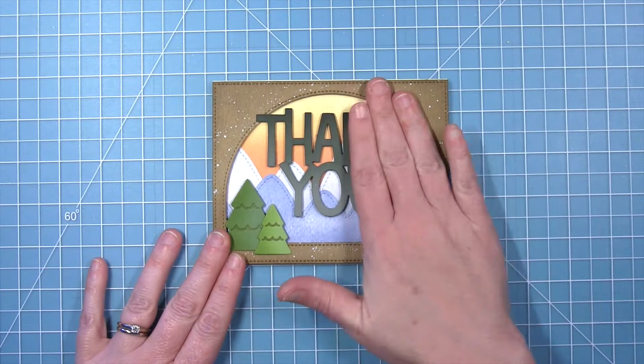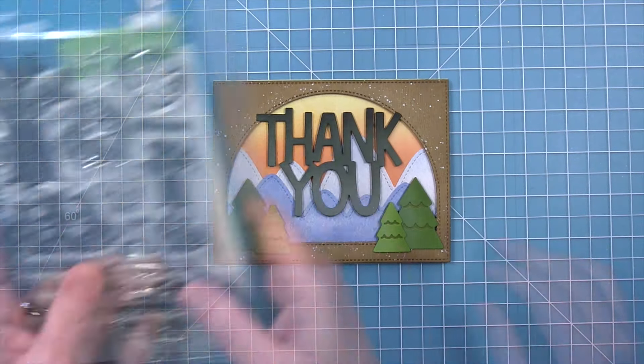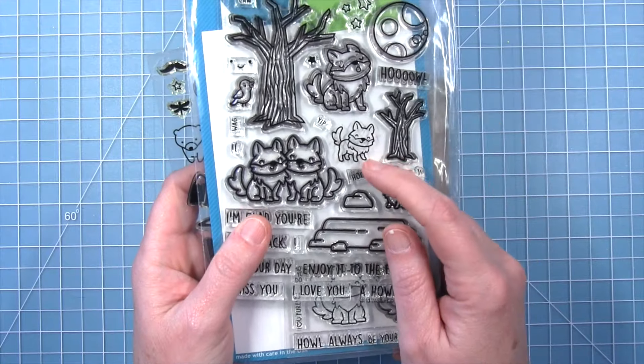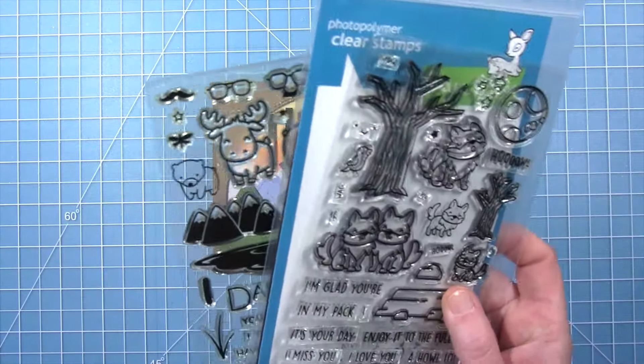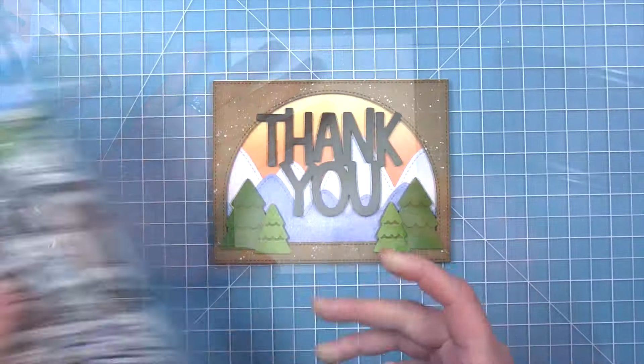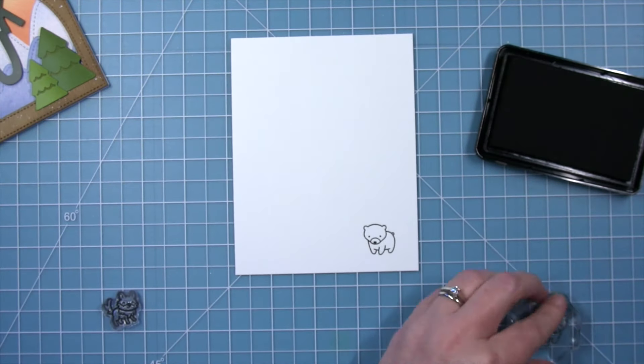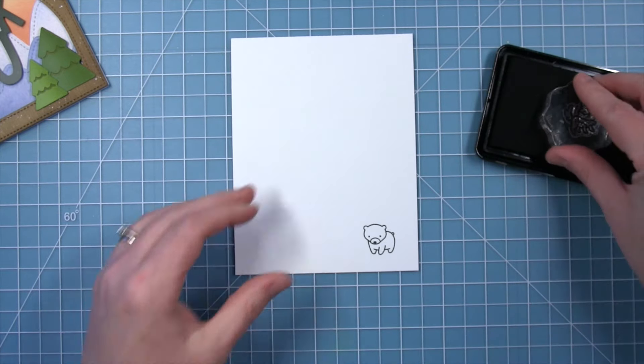Now I am kind of putting it a little bit higher because I am going to add some little forest critters to the bottom. So I look through my stamps, finding tiny critters is a little hard, but I did find the little bear and the little wolf and I'm going to stamp those in some jet black ink so that I can color them with my copic markers.